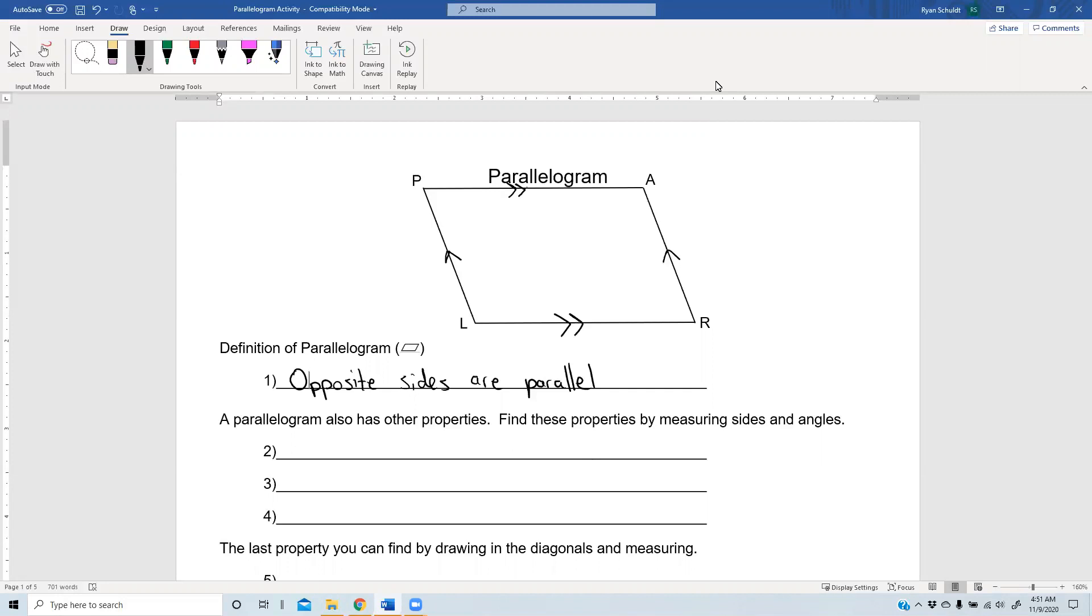So we're just going to kind of talk through it. If you were to measure, some of the things you would find are that AB is the same as LR and PL is the same as AR. You would also find that angle P is congruent to angle R and angle A is congruent to angle L.